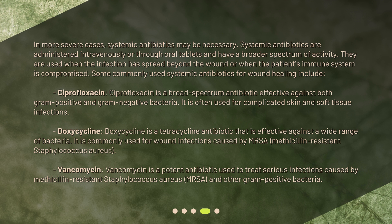Doxycycline is a tetracycline antibiotic that is effective against a wide range of bacteria. It is commonly used for wound infections caused by MRSA, methicillin-resistant Staphylococcus aureus. Vancomycin is a potent antibiotic used to treat serious infections caused by MRSA and other gram-positive bacteria.